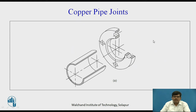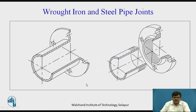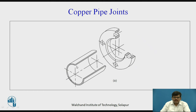Then we have copper pipe joints. In copper pipe joints, the flanges are not an integral part of the pipe. The pipe and the flange are joined together with the help of brazing. Similarly, another pipe and flange joint are taken together and joined with the help of a nut and bolt arrangement. Copper pipe joints can be seen in automobiles.